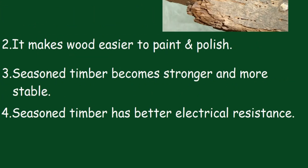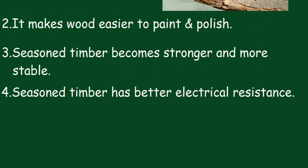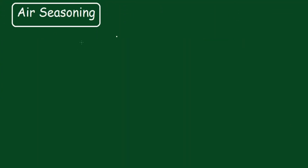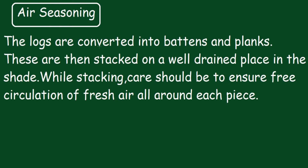Now we will study the types of Seasoning. There are two types. The first is Air Seasoning. For Air Seasoning, the logs are converted into battens and planks. These are then stacked on a well-drained place in a shed. While stacking, care should be taken to ensure free circulation of fresh air all around each piece.